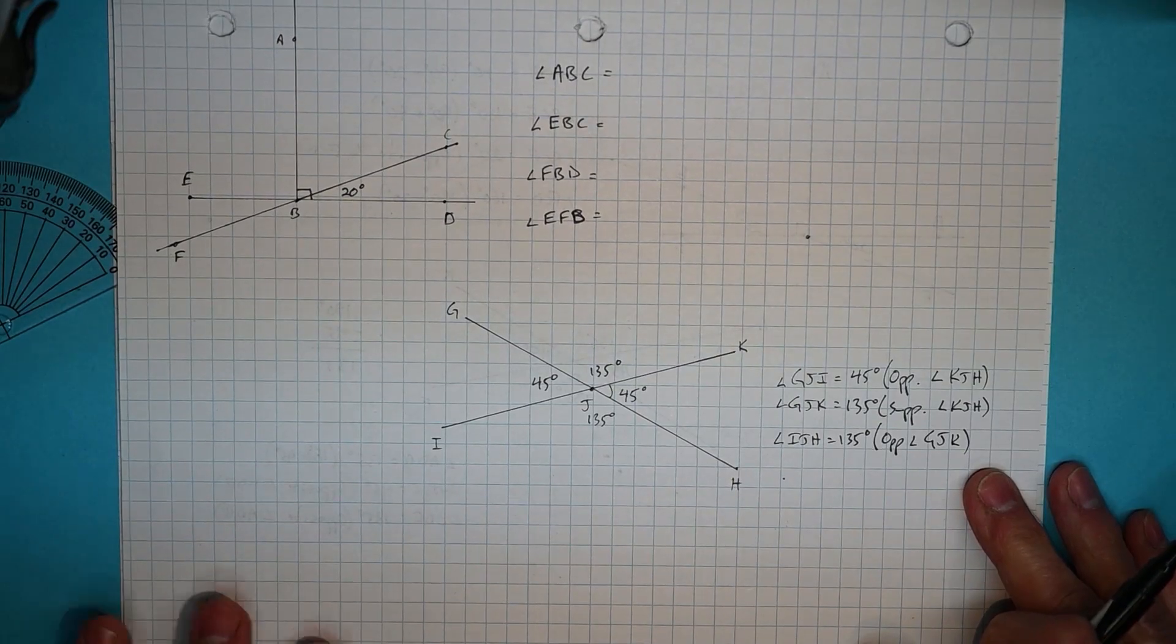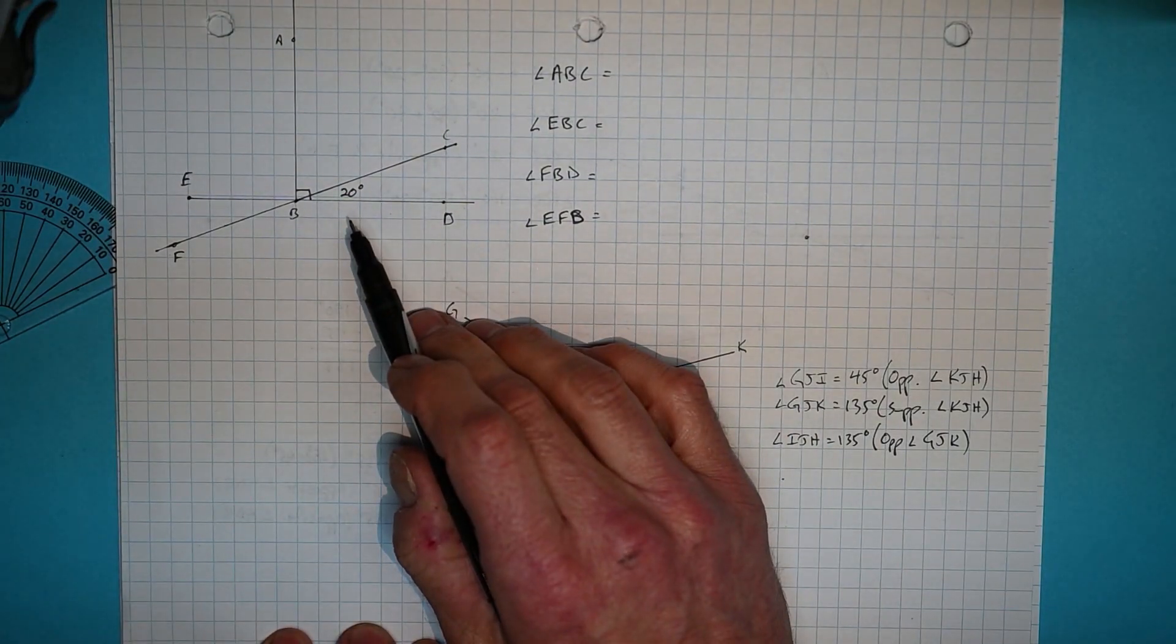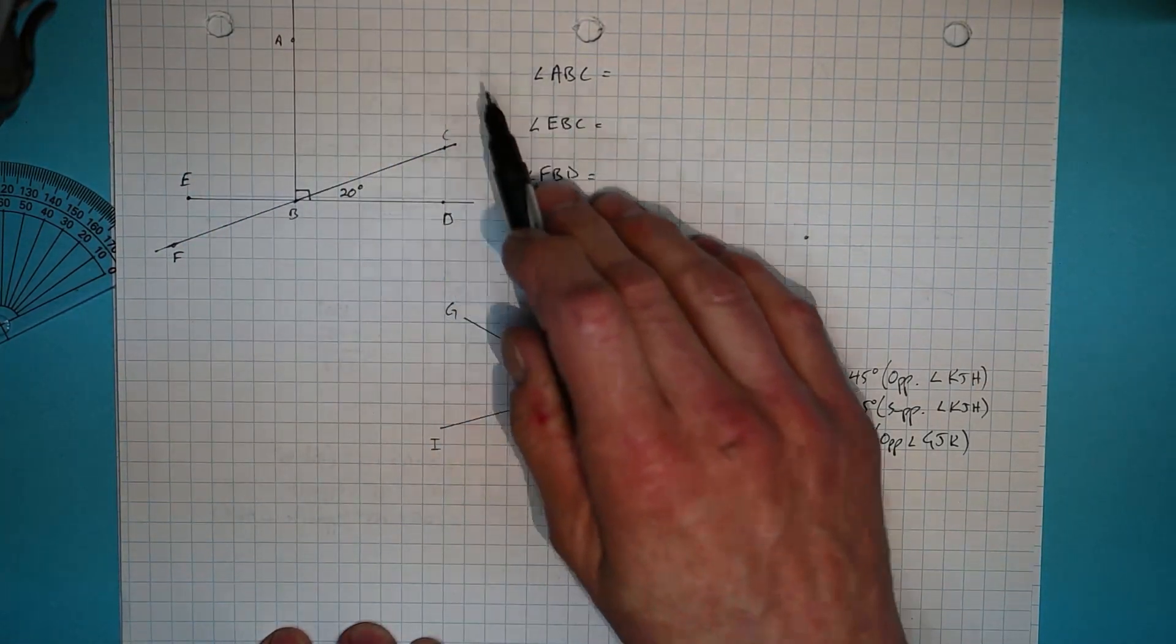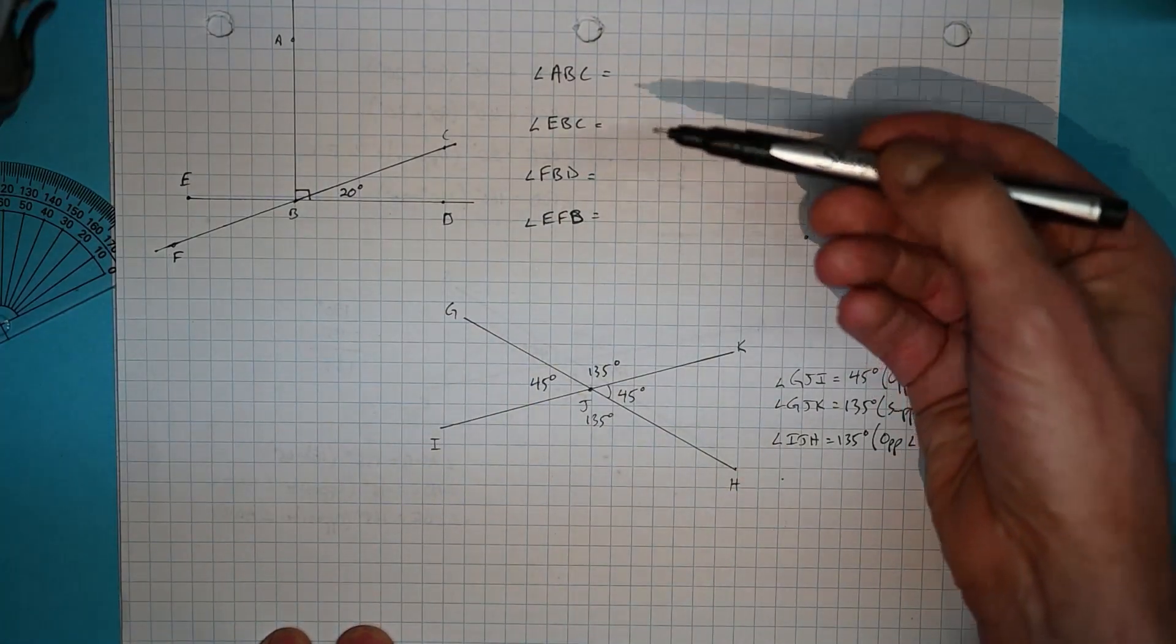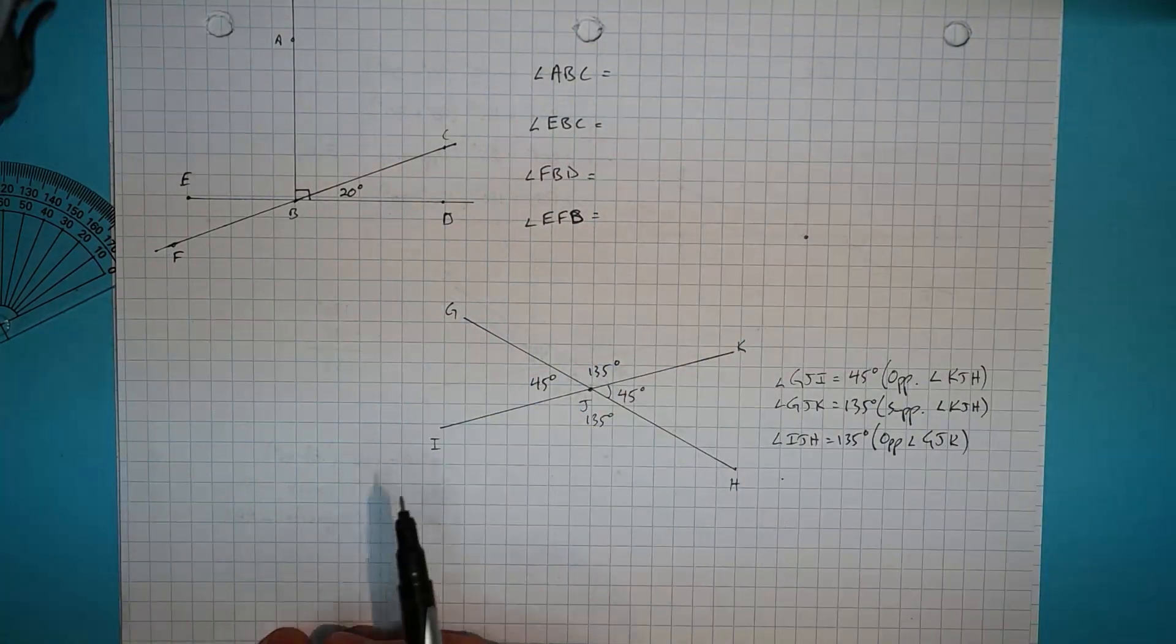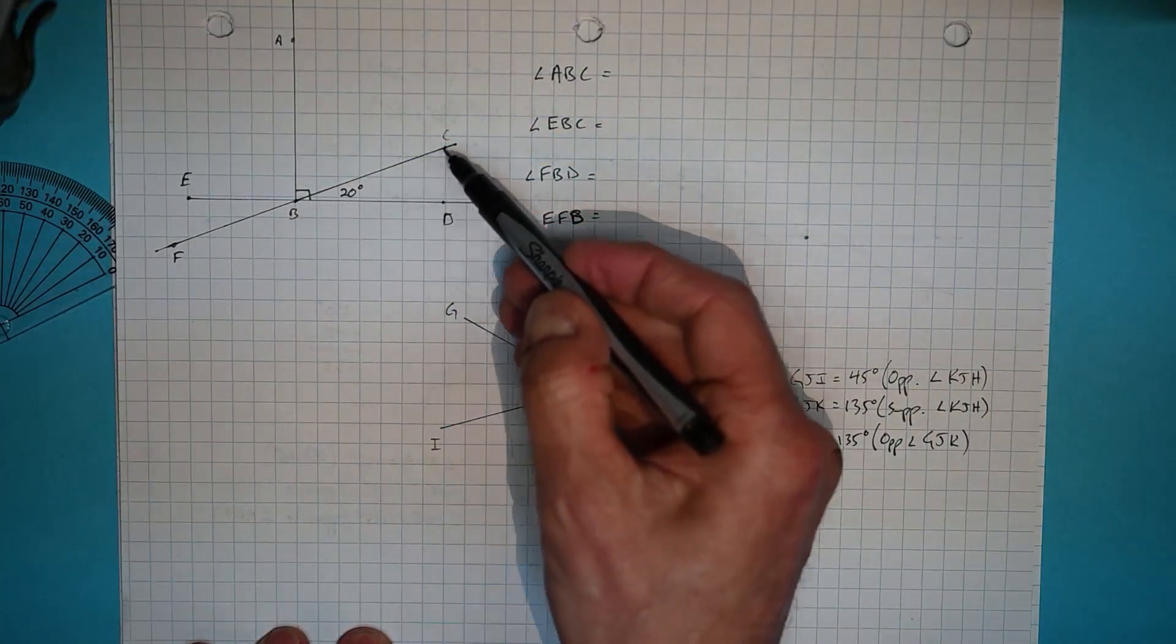So now what I have for you here is a typical sort of system of intersecting lines that you might need to solve some of the angles for. So let's start right at the beginning. Angle ABC.